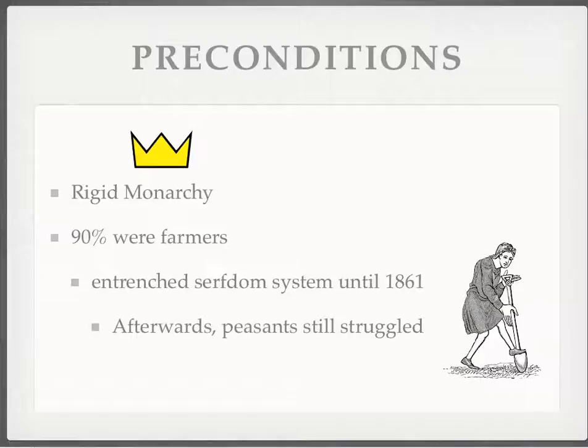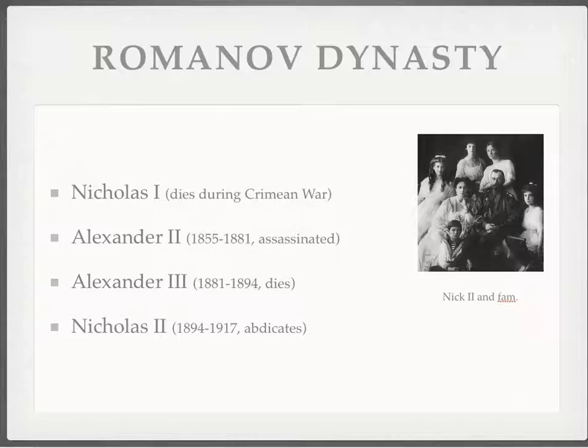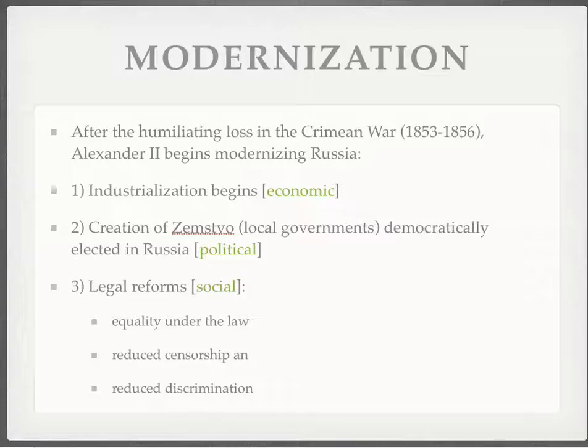We talked about preconditions: the rigid monarchy, the agrarian farming of Russia. Even though serfdom was technically abolished in 1861, peasants really struggled, and that was the majority of the Russian population. This is the dynasty in charge — Nicholas, Alexander, Alexander, Nicholas. The one we're concerned with for the Russian Revolution is Nicholas II, but for background we're going to talk about Alexander II and Alexander III and how they set up what's going on in Russia.